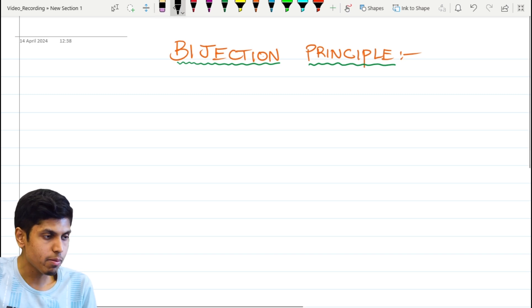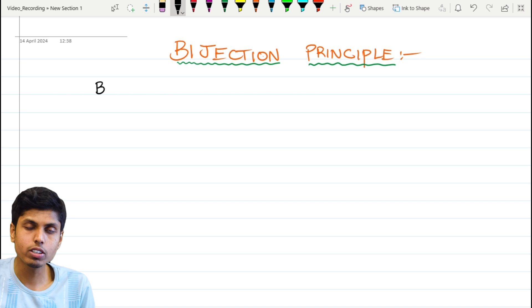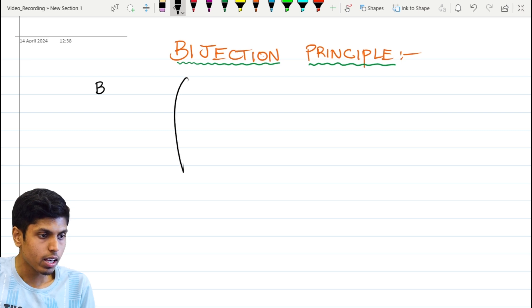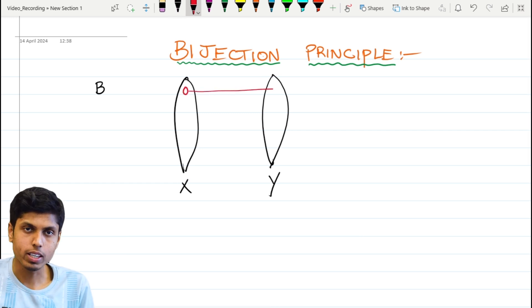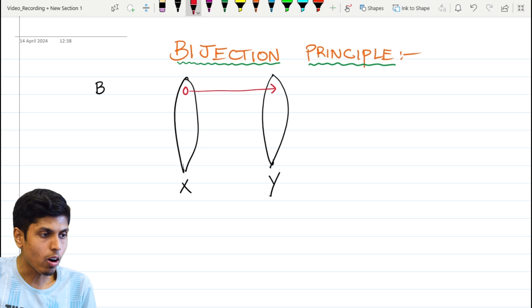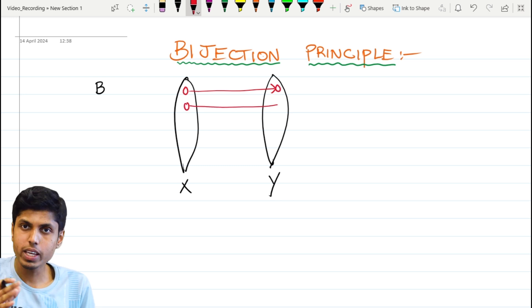Bijection is a type of map from a set to another set. It is a one-on-one map. If you have a set X and a set Y, then each element of set X has a unique image in set Y, and all elements of set Y have a pre-image in set X. These are the conditions for bijective maps.